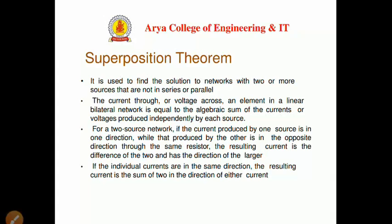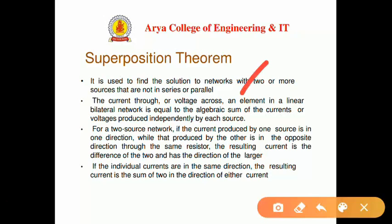The superposition theorem is used to find the solution to a network with two or more sources that are not in series or parallel. The current through or voltage across an element in a linear bilateral network is equal to the algebraic sum of the currents or voltages produced independently by each source.